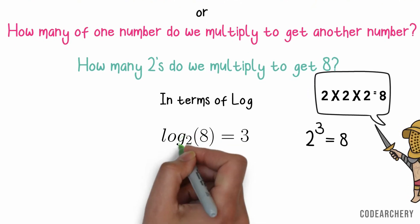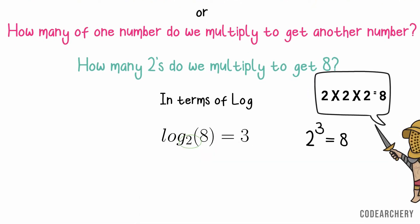According to our definition, base is actually the number we will be multiplying to itself to get our target value. Here, in this case, we multiplied 2 thrice to get our target value that is 8.